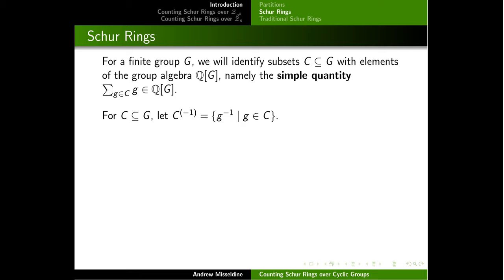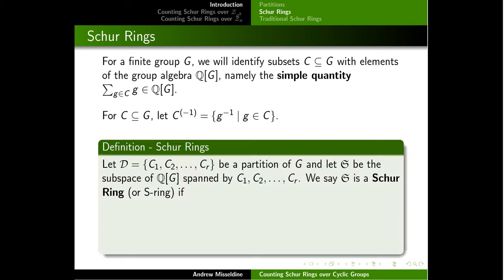Another bit of notation: if we take a subset or an element of the group ring and raise it to the negative one power inside the parentheses, what this means is we're taking the inverse of each element inside that set. With this notation and convention in hand, we can define the notion of a Schur ring.